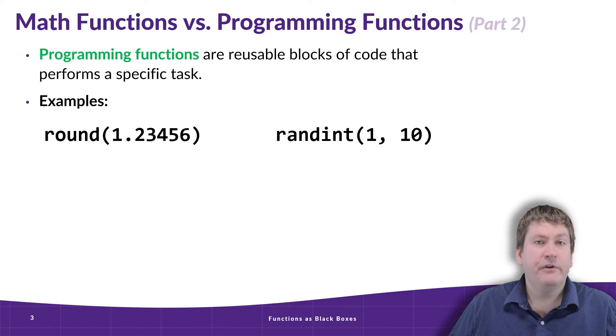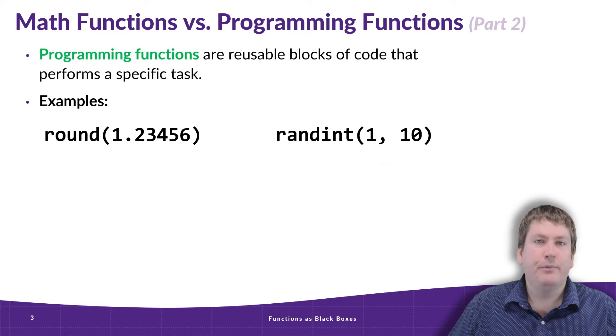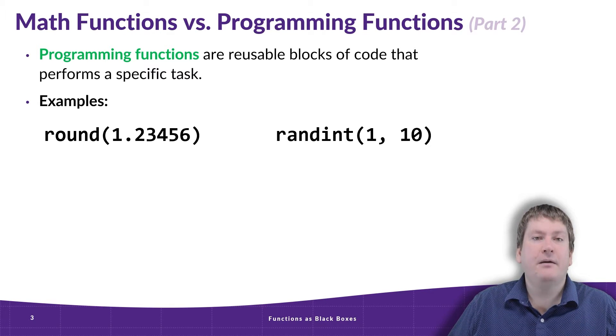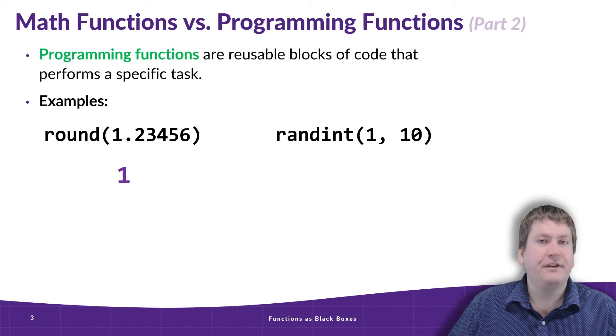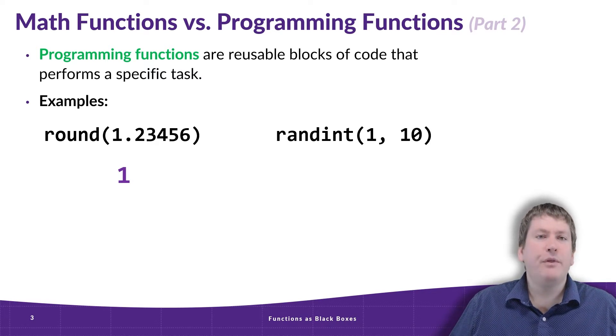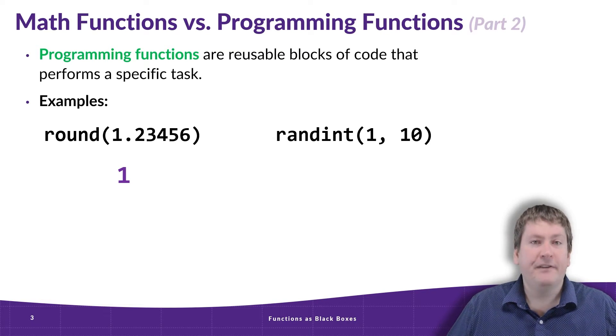First, we have round. This is a built-in function to Python. If you give it a number like 1.23456, it will round that number and produce the rounded number as output. In this case, we'd just get a 1.